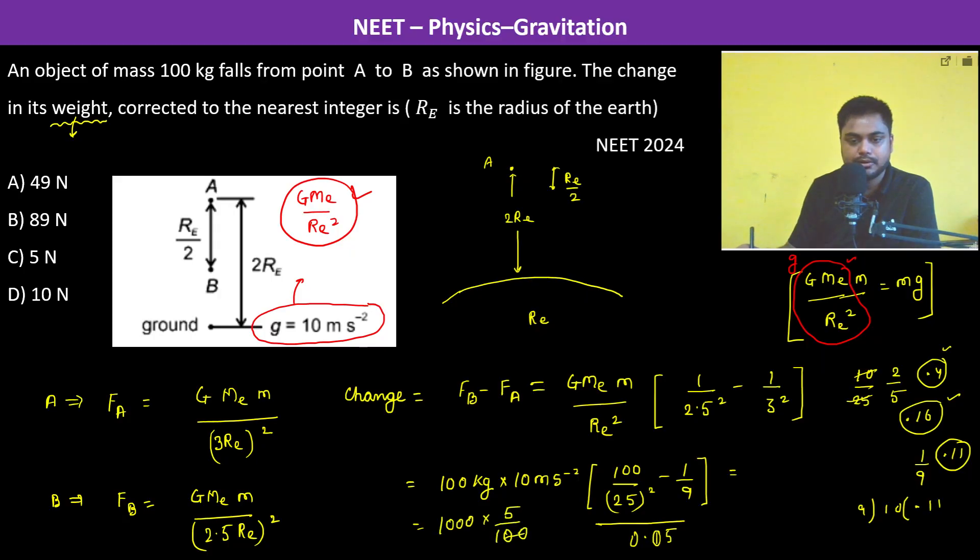So this is 1000 into 5 divided by 100, so this is 50, around equal to 50 newtons. So approximately it is equal to 49 newton. Because we have taken g as 10 meter per second square, that's why we are getting 50. If we would have taken 9.8, we would have got exactly 49.